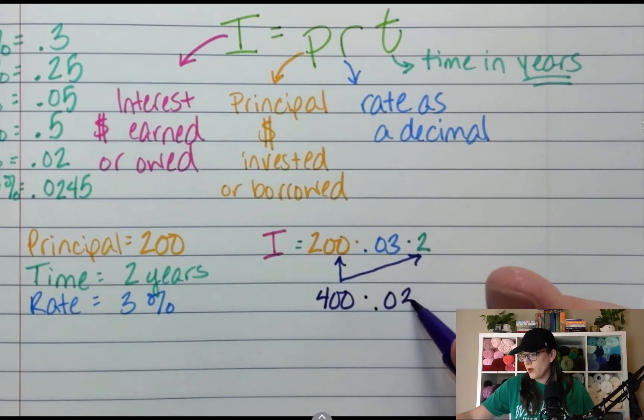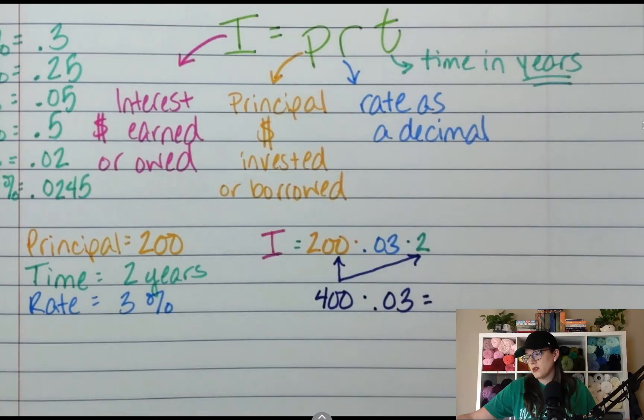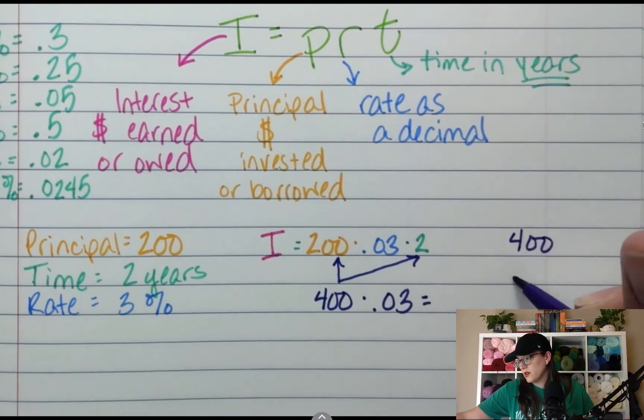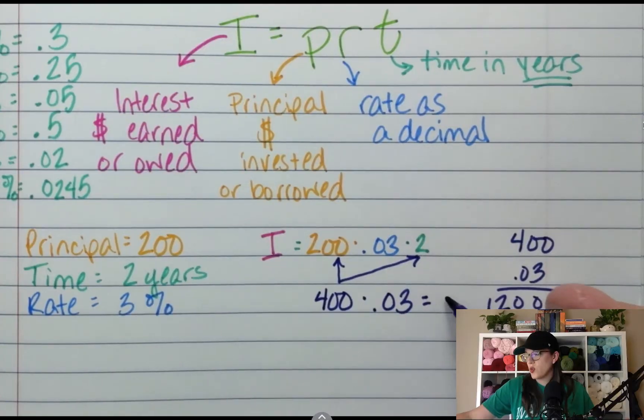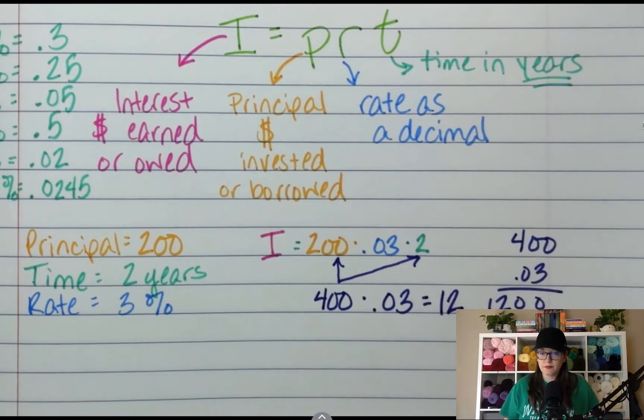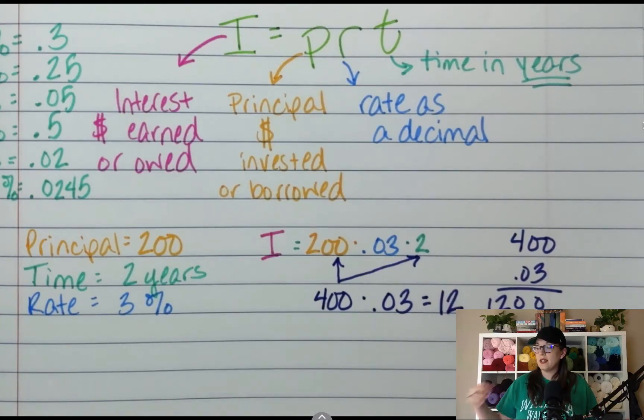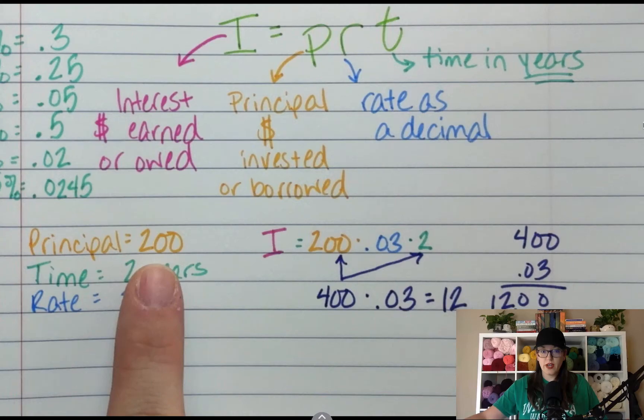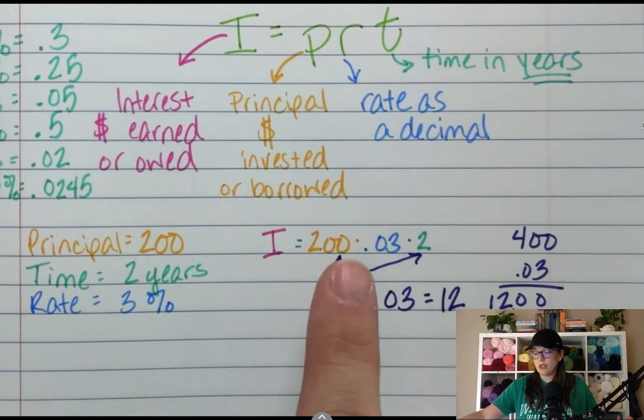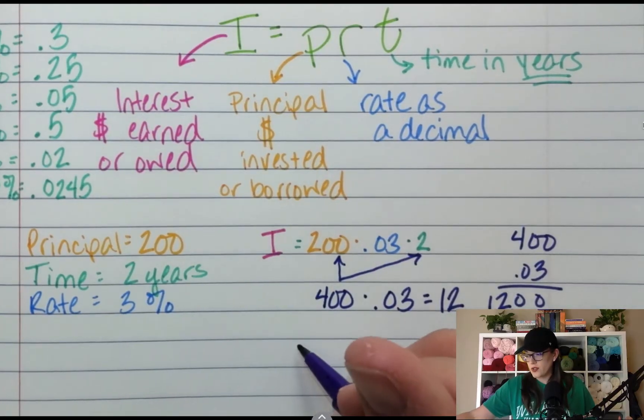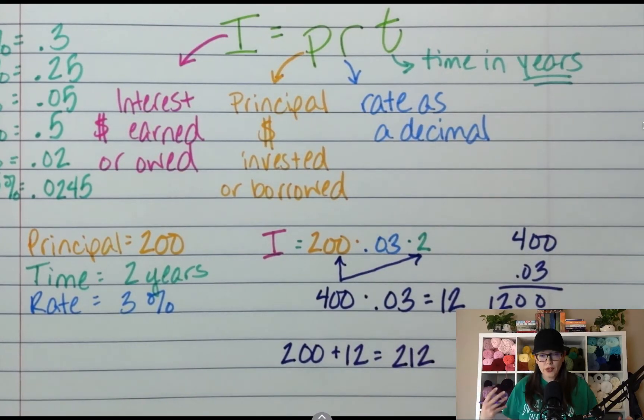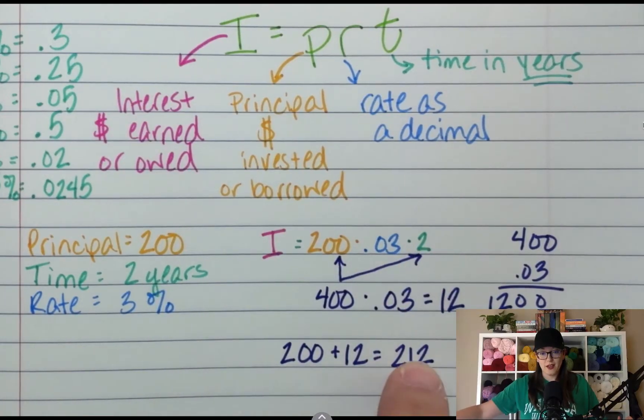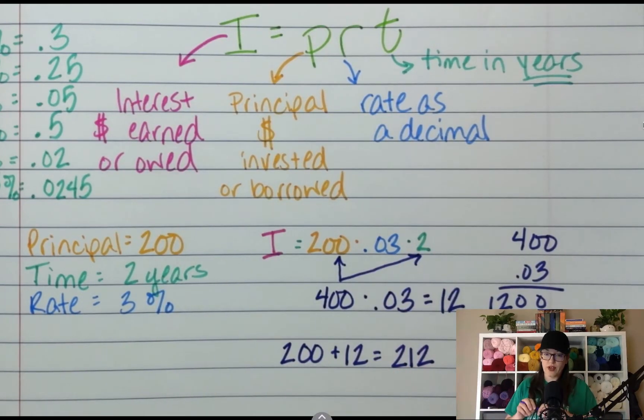So 200 times two is 400. 400 times 0.03 is $12. So what that means is that if I invested $200, I would earn $12 on top of that. So it would be 200 plus 12 is 212. If I borrowed $200 over two years, I would have to pay $212. Now interest rates are not quite like that, but that's a conversation for another time.